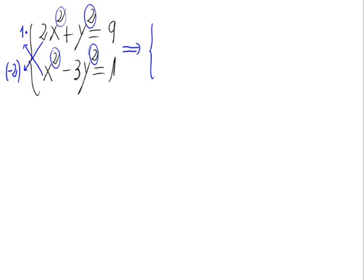The first equation, multiplied by 1, stays the same — no changes. The second equation times minus 2 gives: minus 2 times x-squared, minus 3 times minus 2 is plus 6y-squared, and 1 times minus 2 is minus 2. Now let's add both equations.